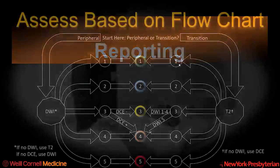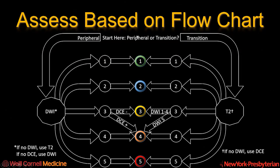This brings us to reporting. The assessment is based on a flowchart. You consider first whether it's peripheral or transition zone, then look at the dominant pulse sequence — T2 in the transition zone, DWI in the peripheral zone. For categories 1, 2, 4, and 5, the overall category is the same as the pulse sequence category. For category 3, you need to look at one other pulse sequence: dynamic contrast in the peripheral zone, and diffusion-weighted imaging in the transition zone. In PIRADS 2.1, there will also be the ability to upgrade a T2 category 2 lesion to overall category 3 depending on diffusion-weighted imaging.